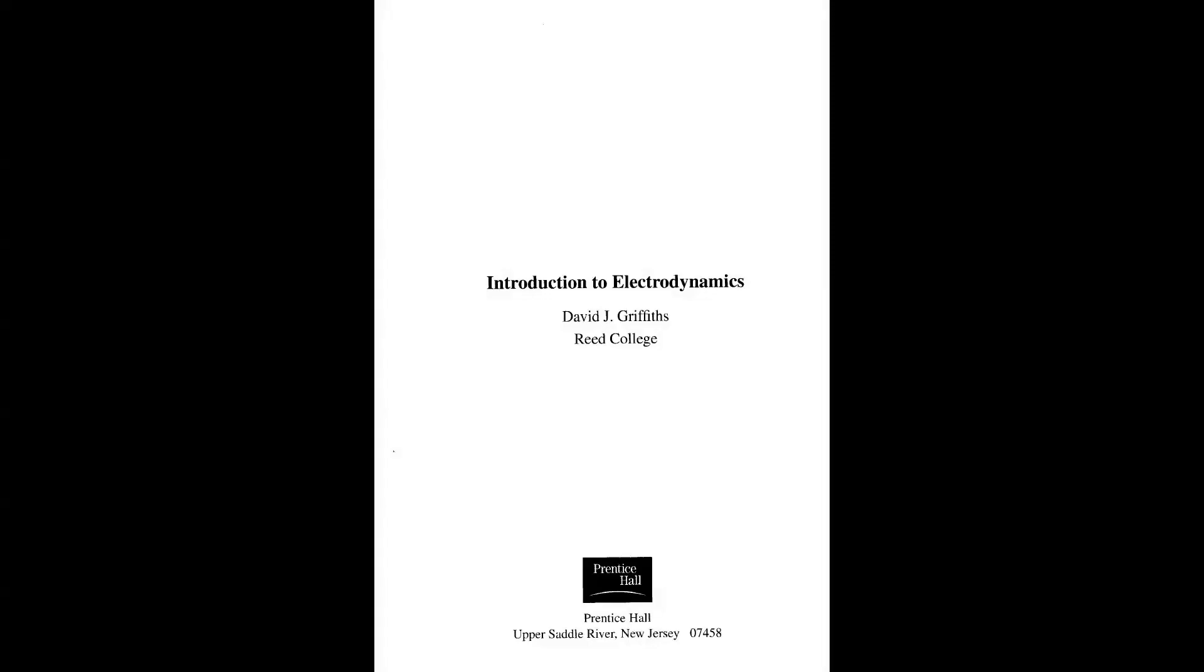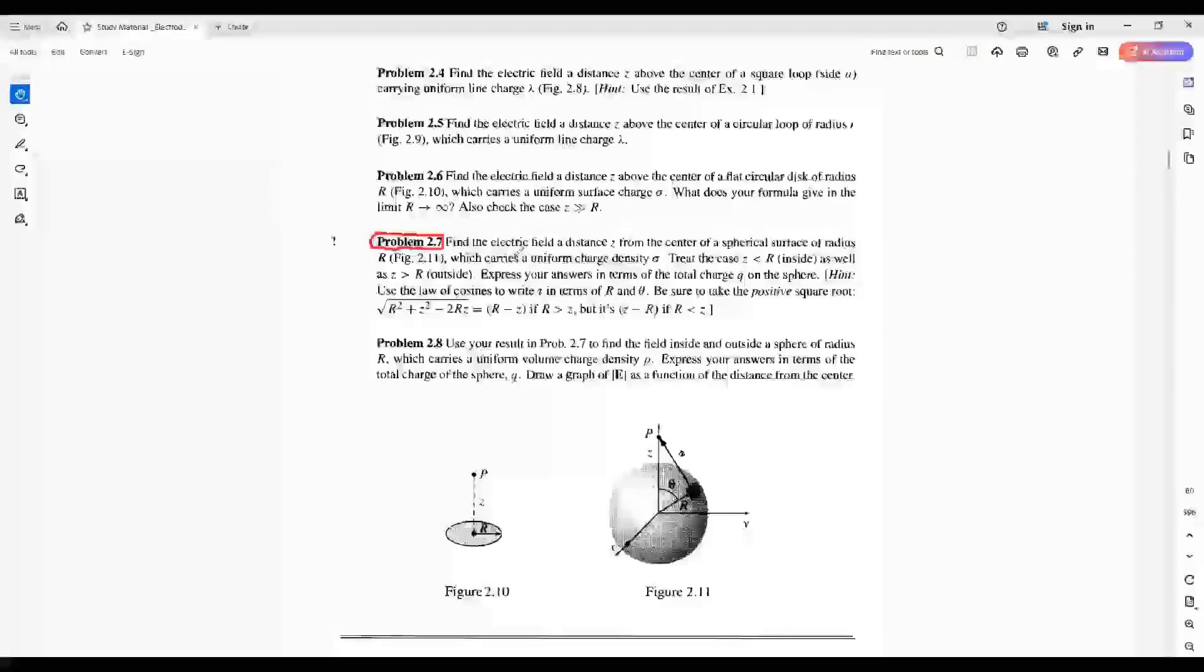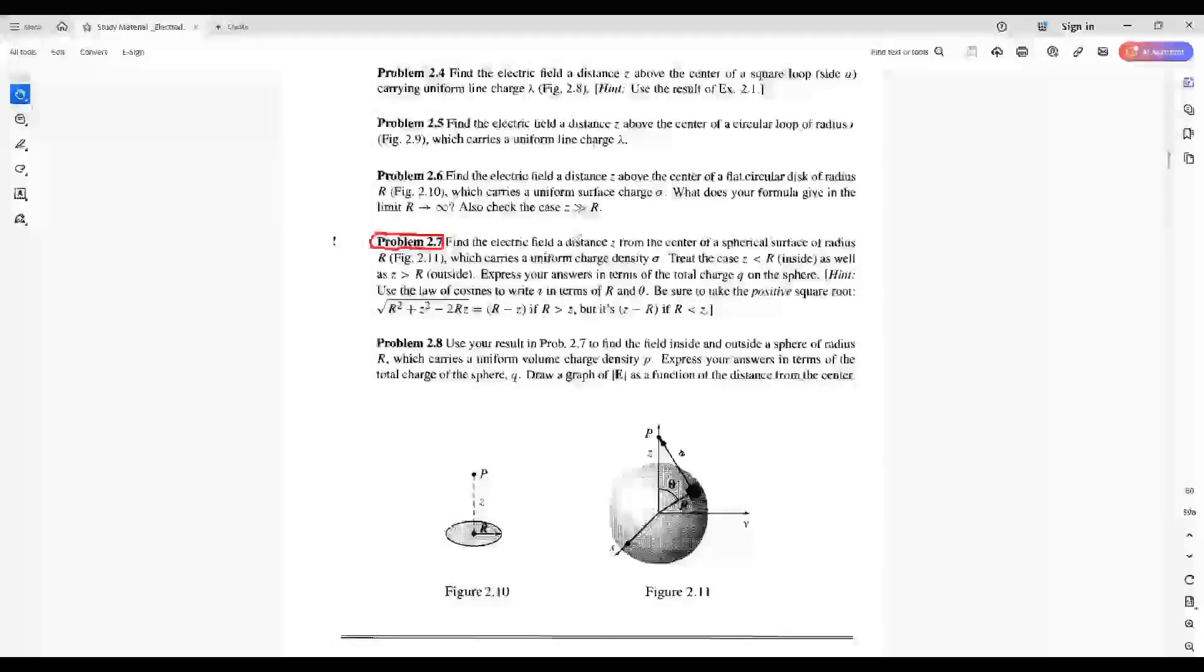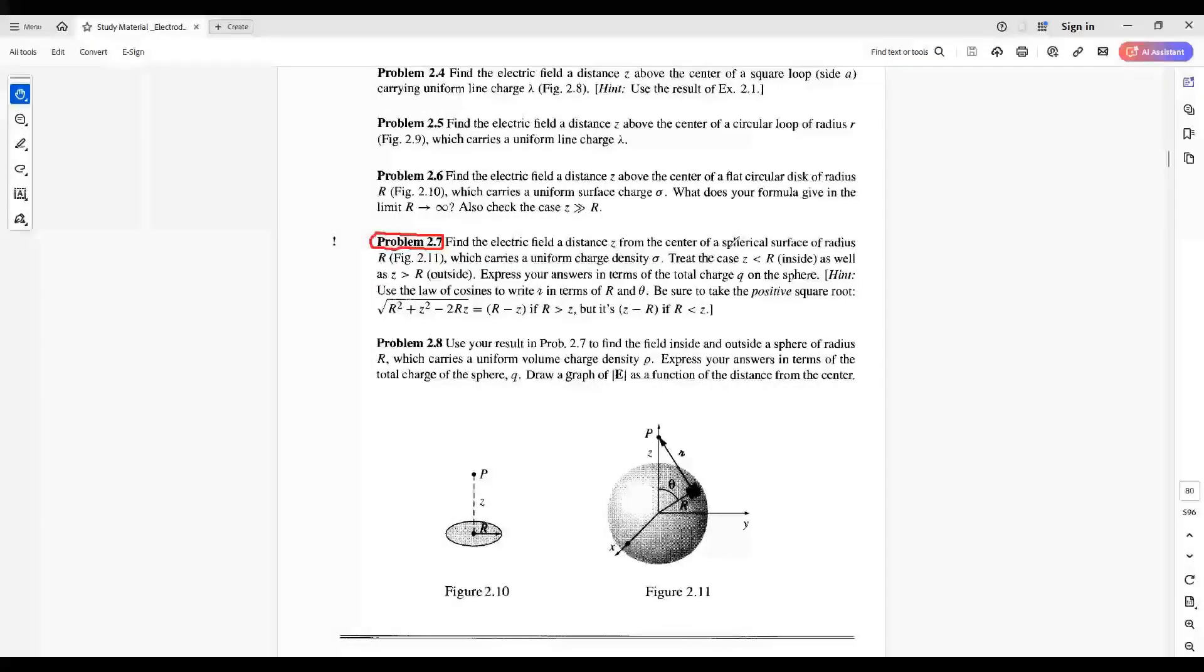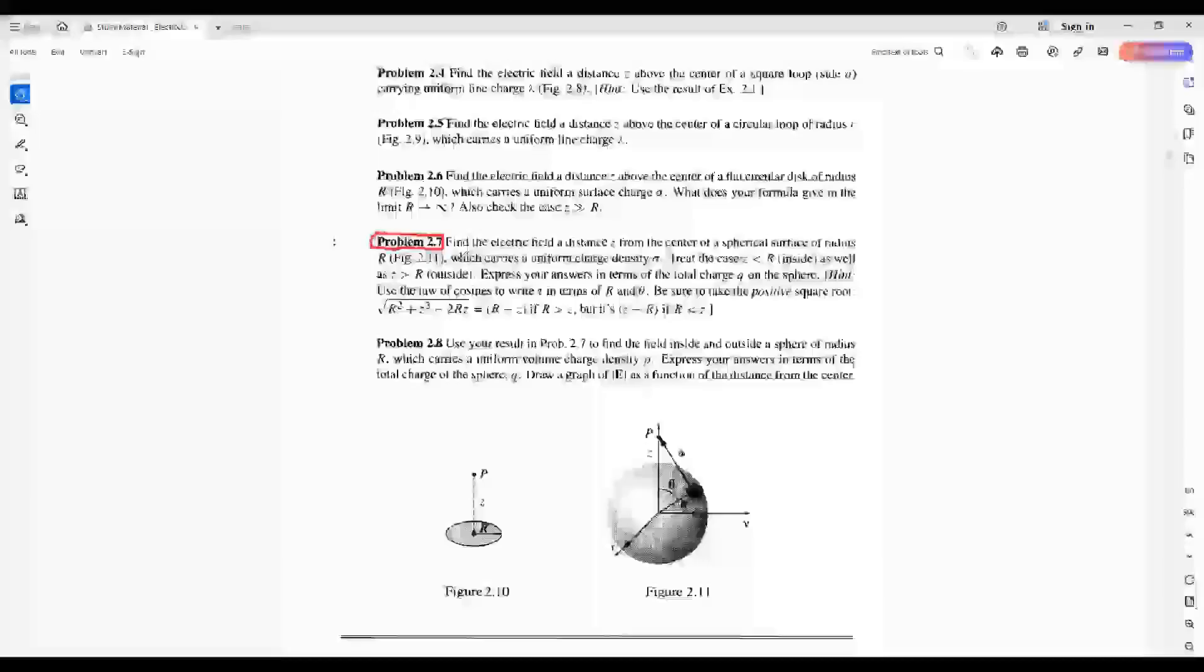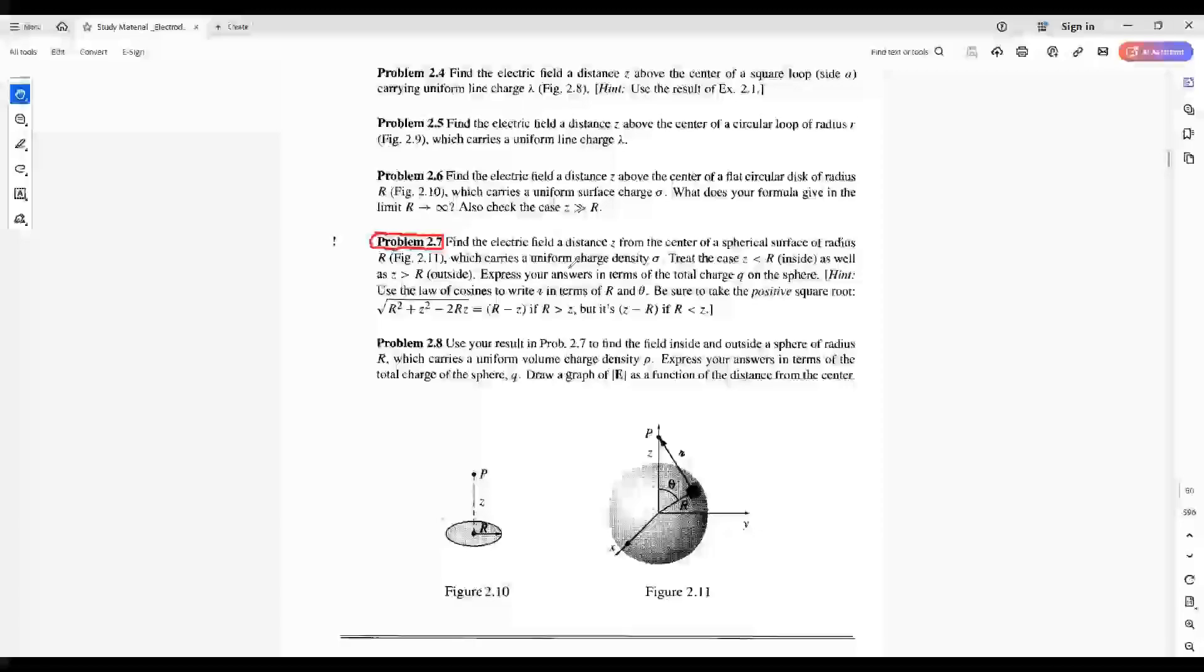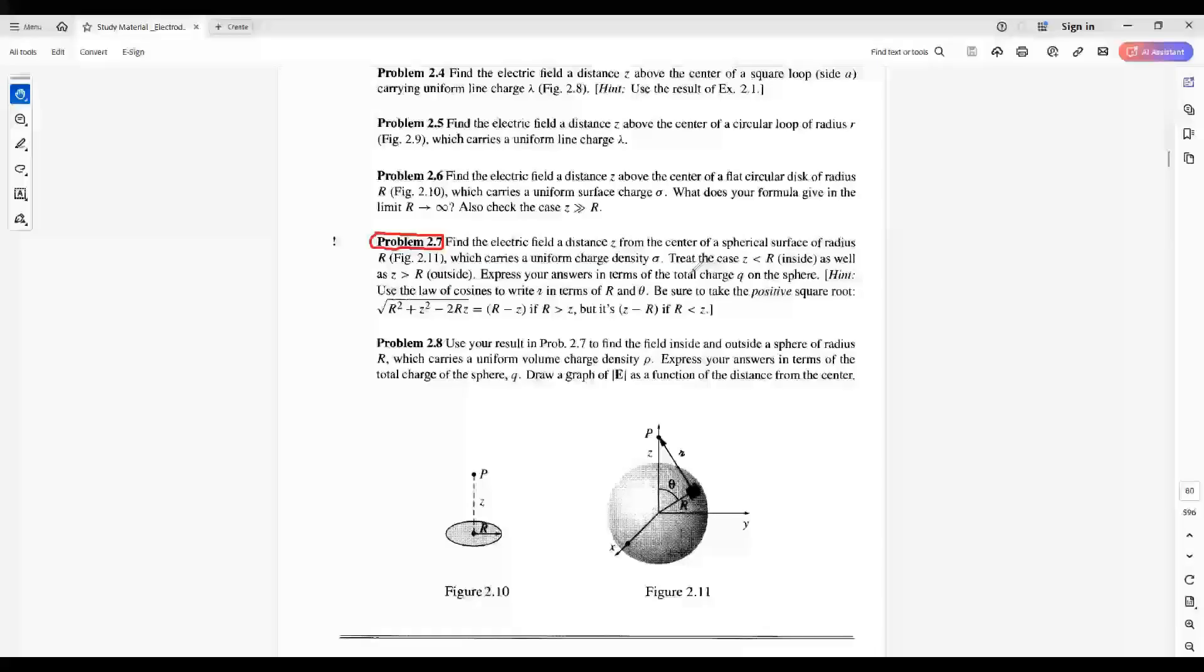Hi, questions in Electricity and Magnetism in this textbook. Problem 2.7: Find the electrical field a distance z from the center of a spherical surface of radius r, shown in this figure, which carries a uniform charge density sigma.